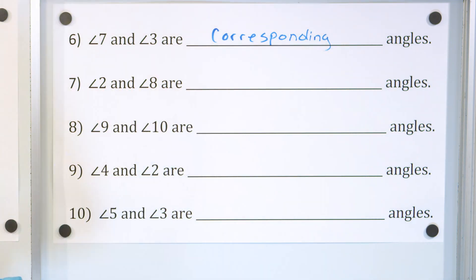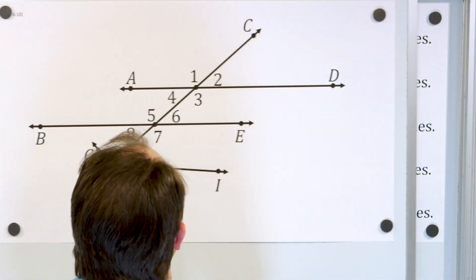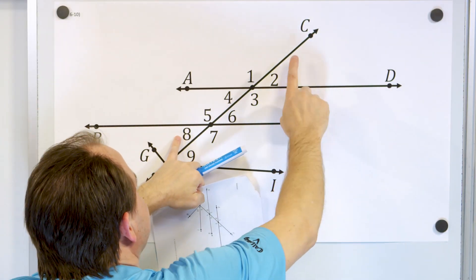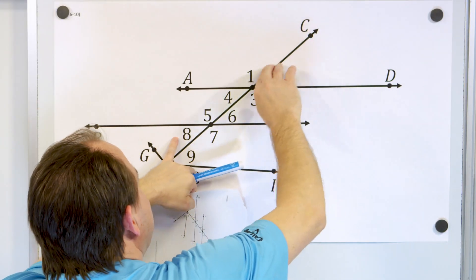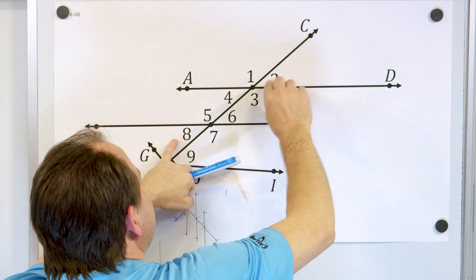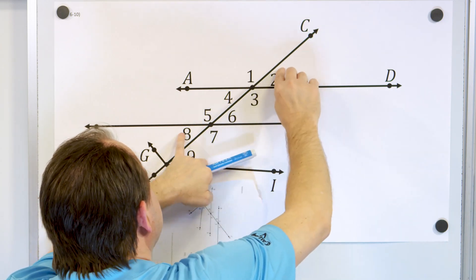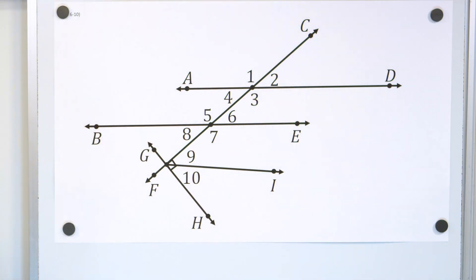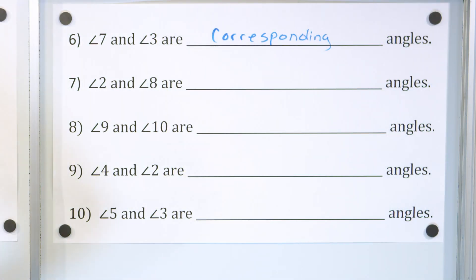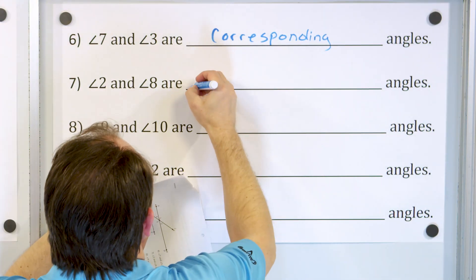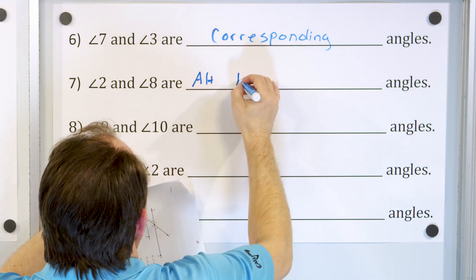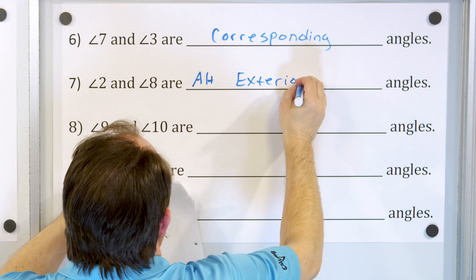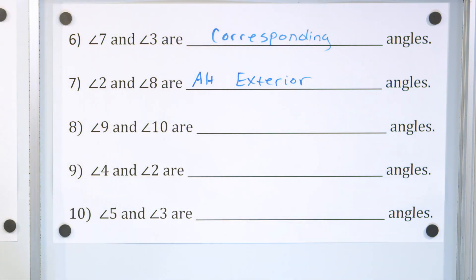Next, angle two and angle eight — what kind of angles? These are on the opposite side of the transversal and they're on the exterior. The interior angles are between the parallel lines, and these are exterior. So angle two and angle eight are alternate exterior angles.